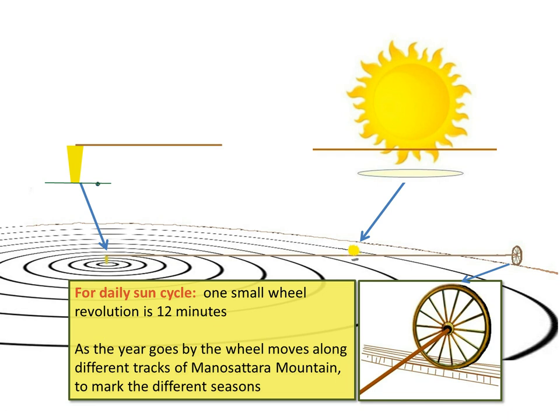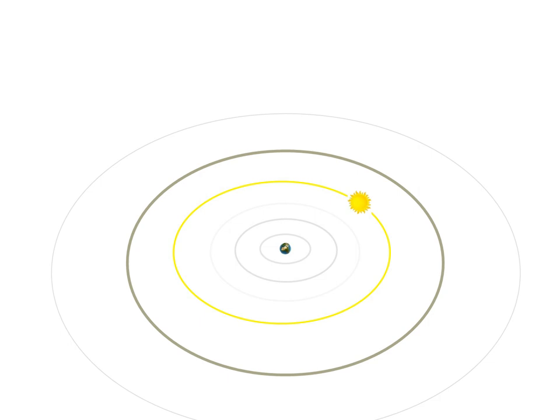The center of Bhoomandala here is Mount Sumero and an axis line going right underneath the Sun, right to the outer boundary there, where there's a small wheel, which is the boundary of Manasatara. For the daily Sun cycle, one small wheel here is a revolution every 12 minutes, so on a daily level, the Sun is going all the way around, carried by the axis, and that takes 24 hours. As the year goes by, the wheel moves along different tracks of this Manasatara mountain to mark the different seasons.